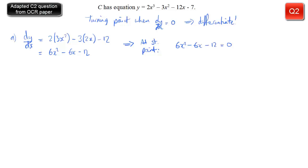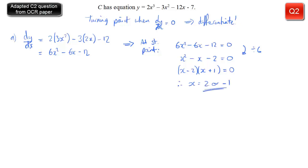We have a nice quadratic. It's even nicer once we divide by 6, giving x squared minus x minus 2 equals 0. You should be able to factorize that fairly easily to get (x minus 2)(x plus 1) equals 0. This gives us the x-coordinates of the turning points: x equals 2 or x equals minus 1.